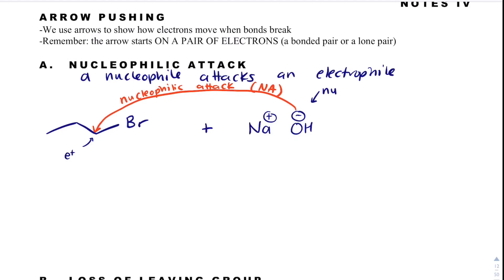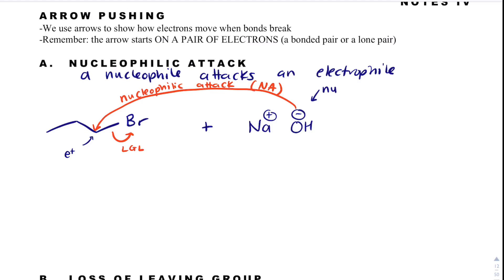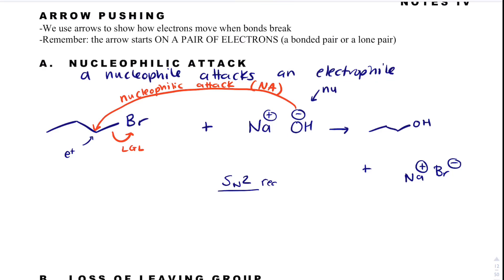The carbon already has four bonds, so the alcohol group can't simply attach. What happens is bromine is very happy to be by itself — it takes its electrons in that bond and leaves. This is called leaving group leaving, abbreviated 'LGL'. Our OH group attaches, bromide leaves as Br-, and sodium follows as a spectator ion. This is going to be called an SN2 reaction.